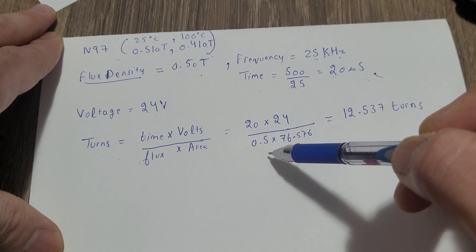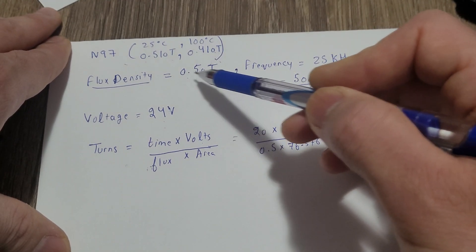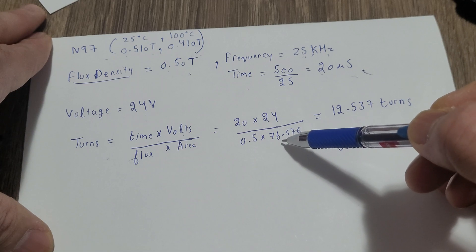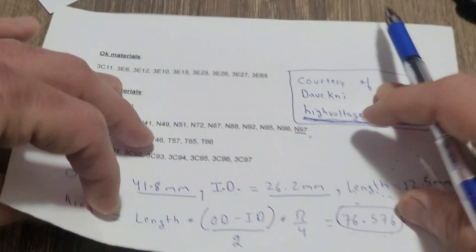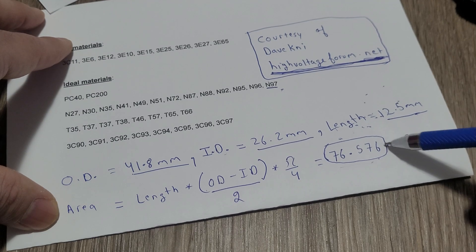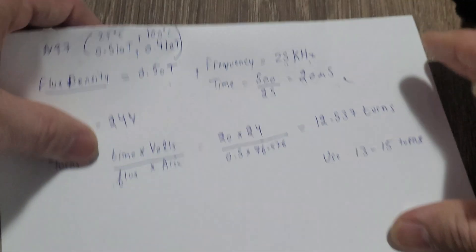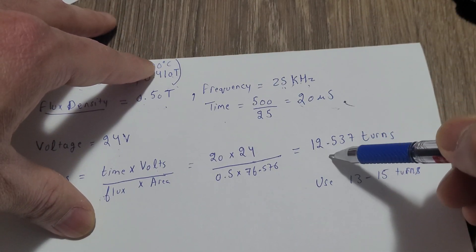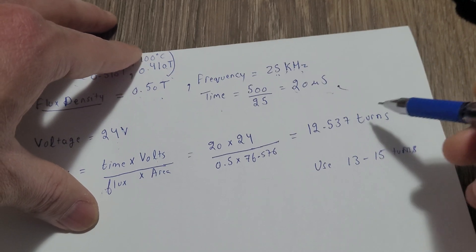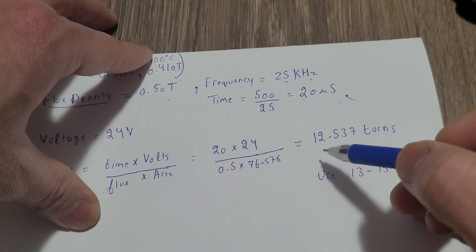76.576 will give you 12.537 turns. Use 13 to 15 turns.